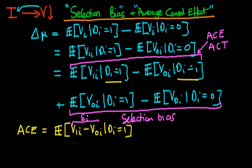Importantly, this is the causal effect of infrastructure spending for those states or districts which actually did receive infrastructure spending — those for which di equals 1. Importantly, we don't actually observe v0i, so v0i here is counterfactual. But we can still include it for now before we come up with anything better. We expect that the average causal effect of infrastructure spending is going to cause violence to decline, so we actually expect this term to be less than zero.